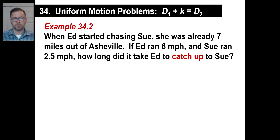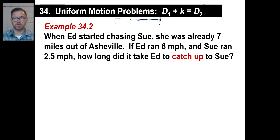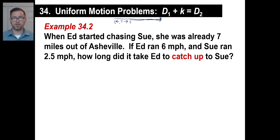Let's try one more. When Ed started chasing Sue, she was already 7 miles out of Asheville. Ed ran 6 miles an hour and Sue ran 2.5 miles an hour. How long did it take Ed to catch up to Sue? Let's draw this — Sue is out ahead, Ed is 7 miles back. Eventually Ed runs and runs and catches Sue. So Ed's distance equals Sue's distance plus 7. That's our equation.